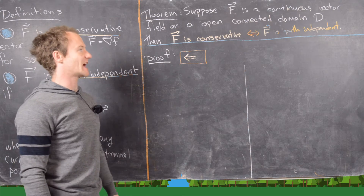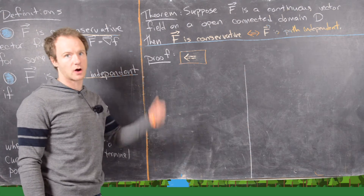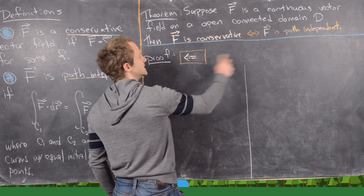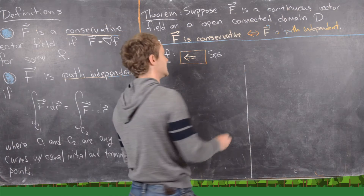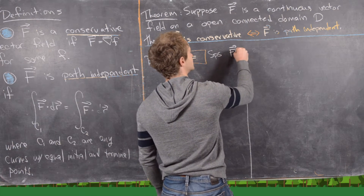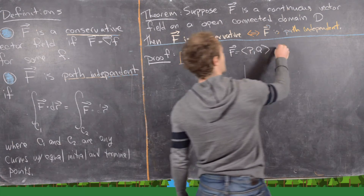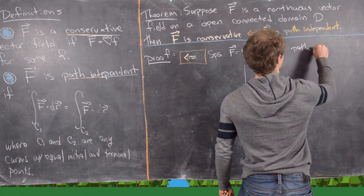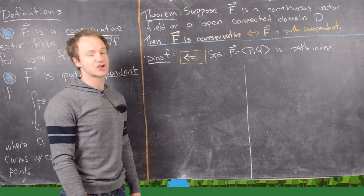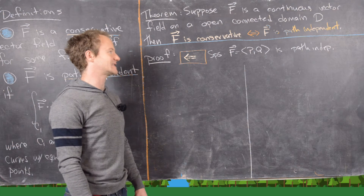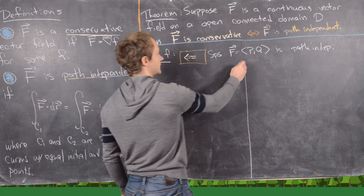Now we prove the reverse direction, which we'll do in R2 — a similar exercise works in R3 or Rn. We suppose F is the vector field in R2 with component functions P and Q, and it is path independent. We want to show it is conservative by constructing a potential function for F.